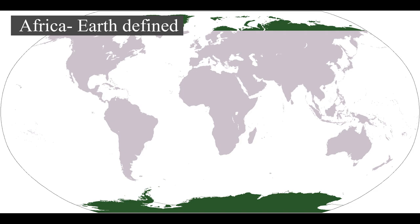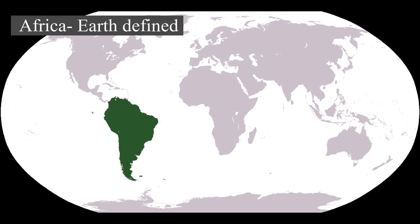The earliest Homo sapiens modern human remains found in Ethiopia, South Africa, and Morocco date to circa 233,000, 259,000, and 300,000 years ago respectively, and Homo sapiens is believed to have originated in Africa around 350,000–260,000 years ago. Africa is also considered by anthropologists to be the most genetically diverse continent as a result of being the longest inhabited.